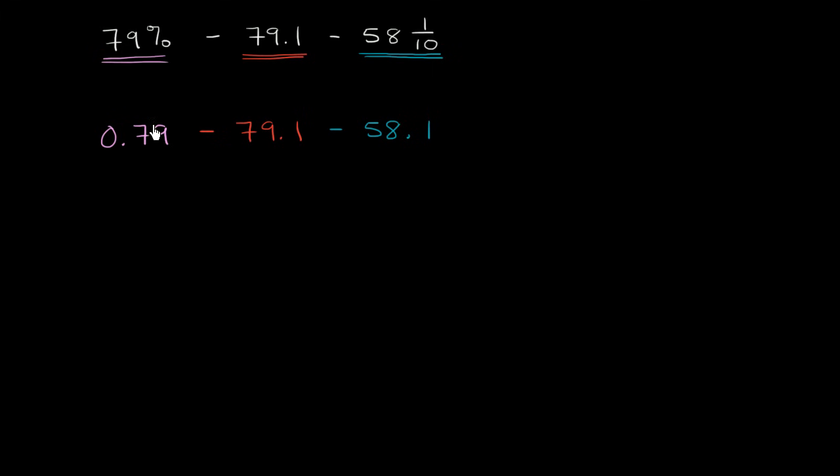Now, the first thing that jumps out at you is you have a fairly small number here, a small positive number. It's less than 1. And you're subtracting fairly large numbers right over here. So your whole answer is going to be negative. And to make sense of this a little bit, what I'm going to do is I'm going to factor out a negative sign. And that'll make the computation, at least in my brain, a little bit easier. So if we factor out a negative sign...